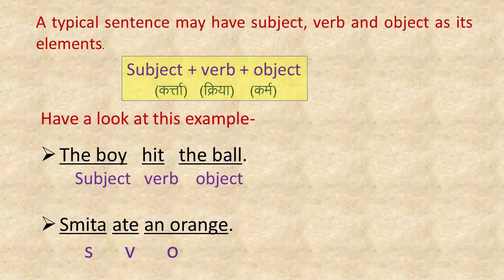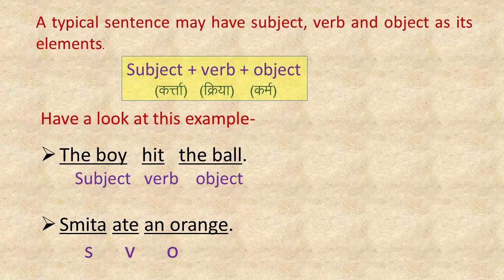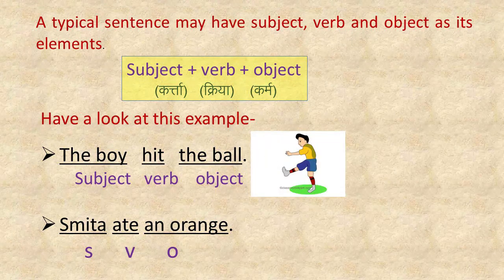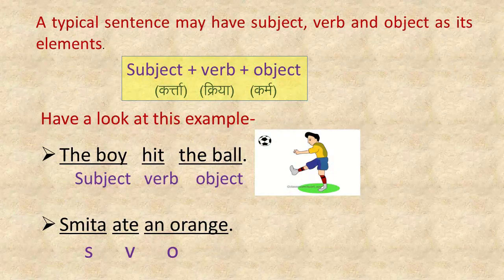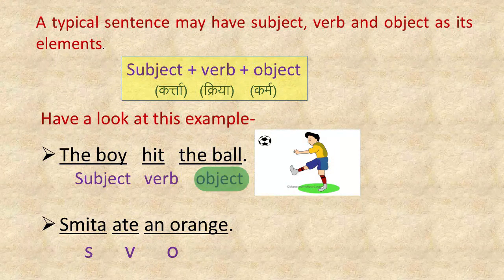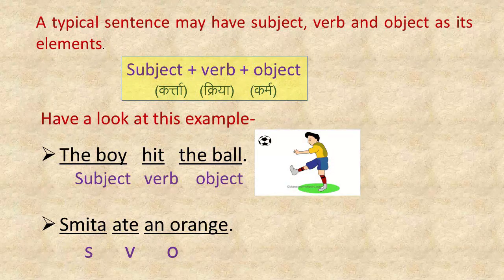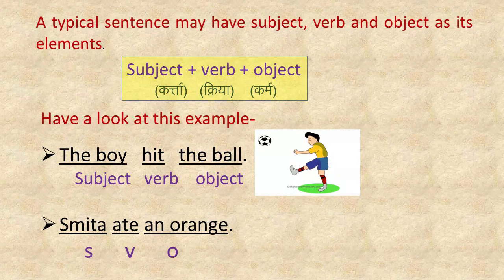Let us understand this with the help of an example: 'The boy hit the ball.' In this sentence, first comes the subject, then comes the verb, and then the object. So in this sentence, 'the boy' is the subject, 'hit' is the verb, and 'the ball' is the object.